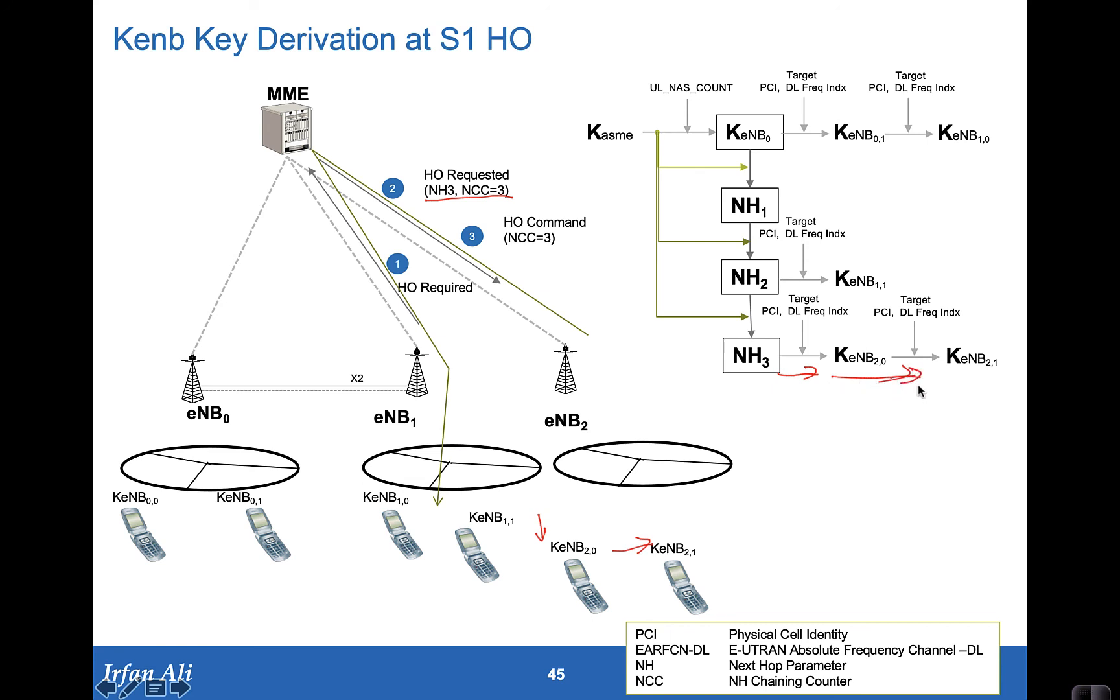So this is the difference between an X2 handover and an S1 handover: in an S1 handover, it's a vertical key derivation that is happening at the handover, whereas in X2, because the communication happens on X2 before and the keys are already derived, by the time the path switch comes back, you can only use it for the subsequent handover.